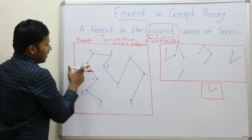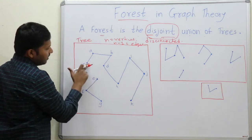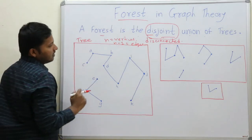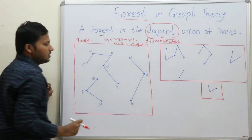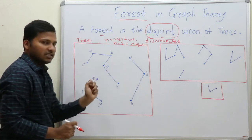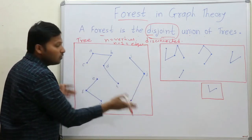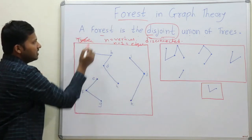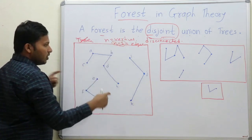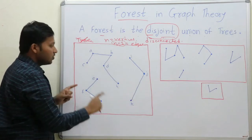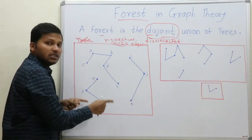I will first delete this edge, then delete another one. When I delete these two edges, there are now three components in this graph. This is not a tree anymore because there are no longer n-1 edges — I have deleted some edges. So this graph with multiple components is called a forest.